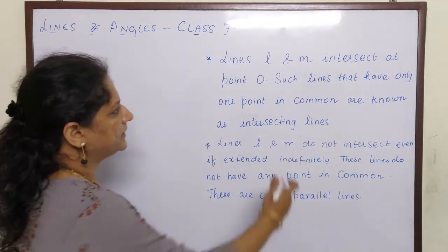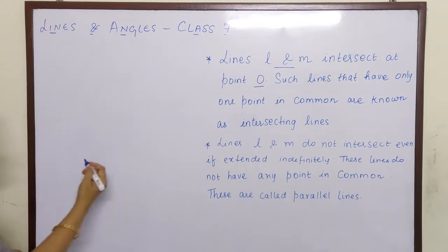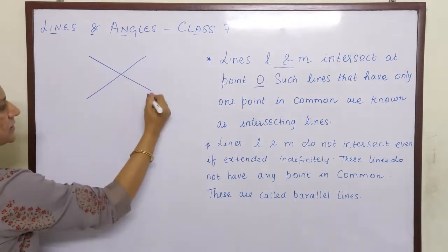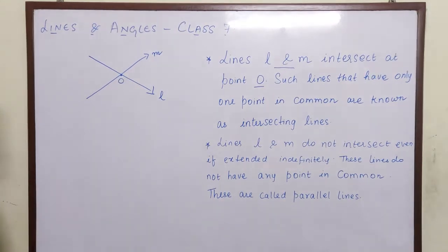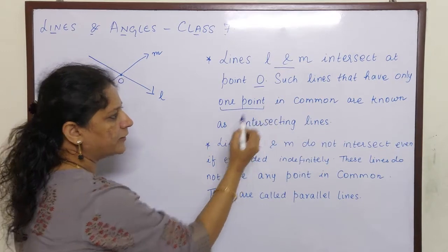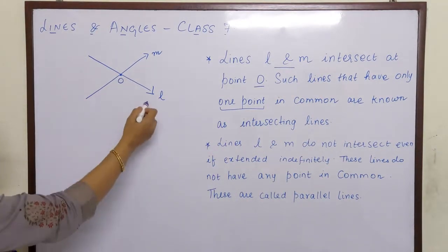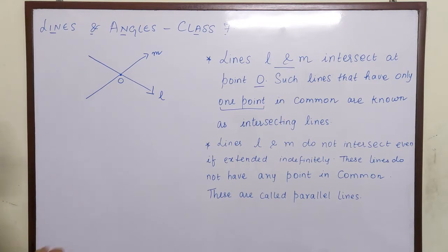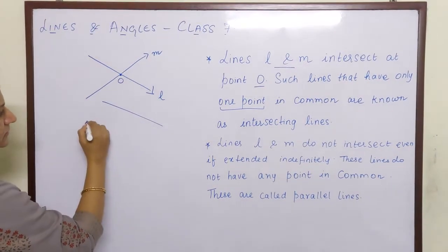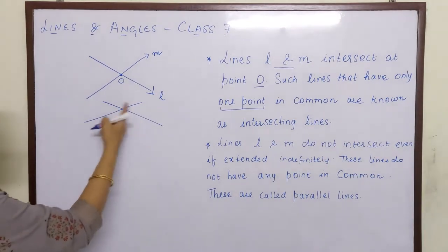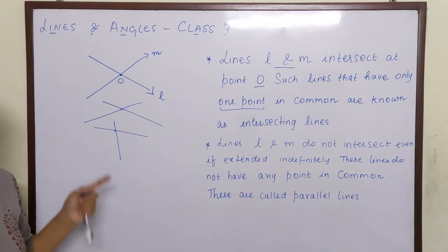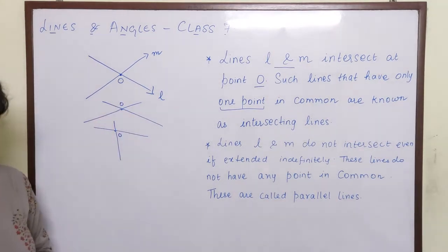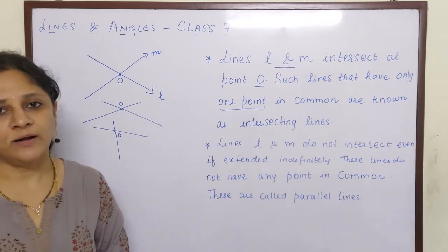Lines L and M intersect at point O. Such lines that have only one point in common are known as intersecting lines. That means line L and M can be called intersecting lines because they intersect at only one point. They are called intersecting lines because there are two lines intersecting at one point.